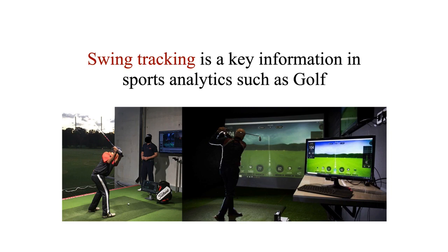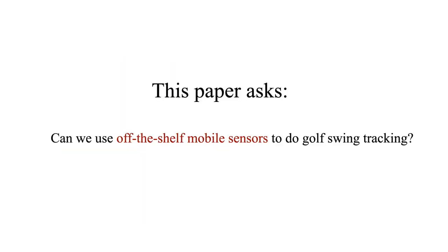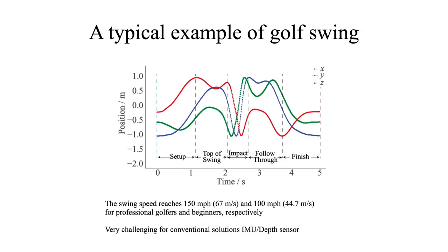So what is sports analytics? We take golf swing as an example. From the image, we can see that two players analyze how good their swing in the studio by various sensors. In sports analytics, swing tracking is key information in many sports such as golf. This paper asks, can we use off-the-shelf mobile sensors to do golf swing tracking?